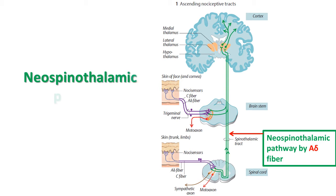The neospinothalamic tract starts from the receptor — the free nerve ending — and from there the A delta nerve fiber, which is the first order neuron, reaches the posterior horn of the spinal cord. The cell body of this first order neuron is present in the dorsal root ganglion. It then reaches the posterior horn and goes to Rexed laminae 1 and 5.